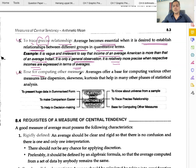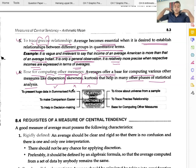Function six: base for computing other measures. Averages offer a base for computing various other measures like dispersion, skewness, kurtosis that help in many other phases of statistical analysis. Averages act as a base for further deeper analysis.